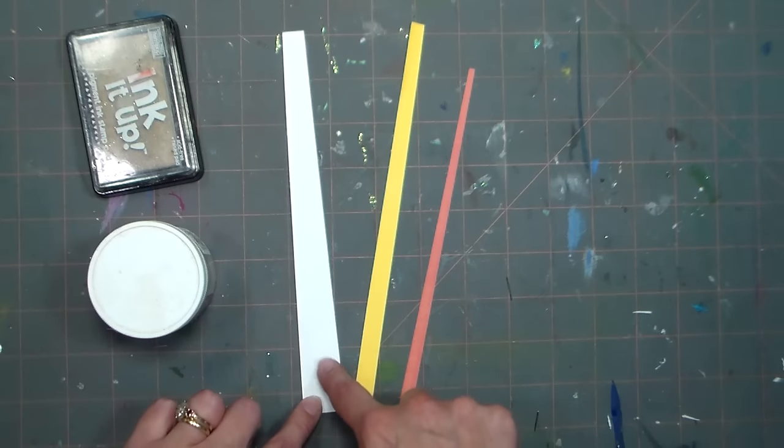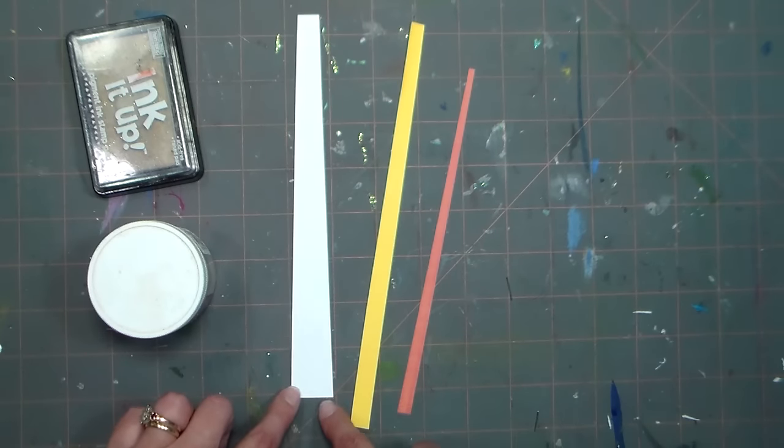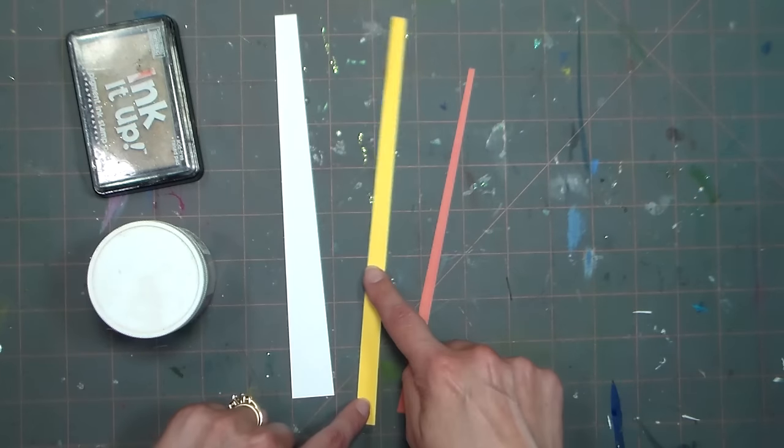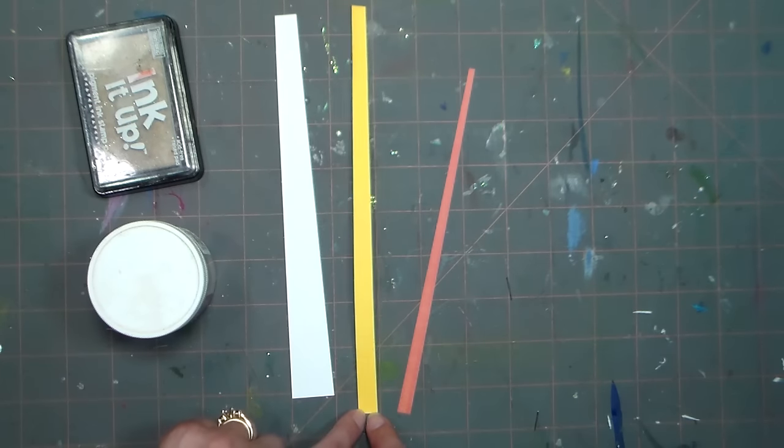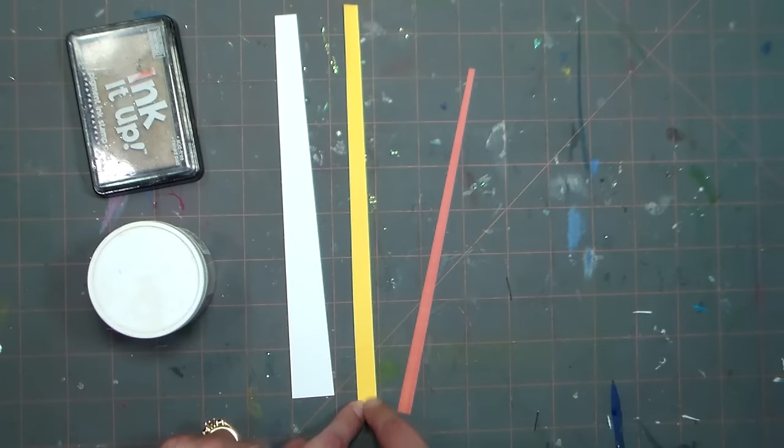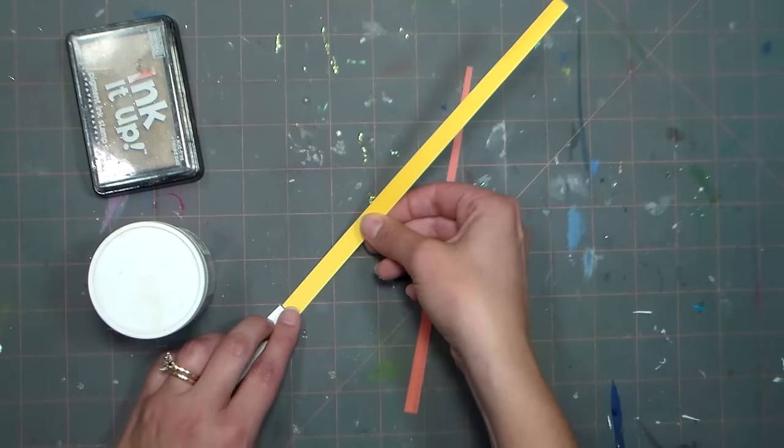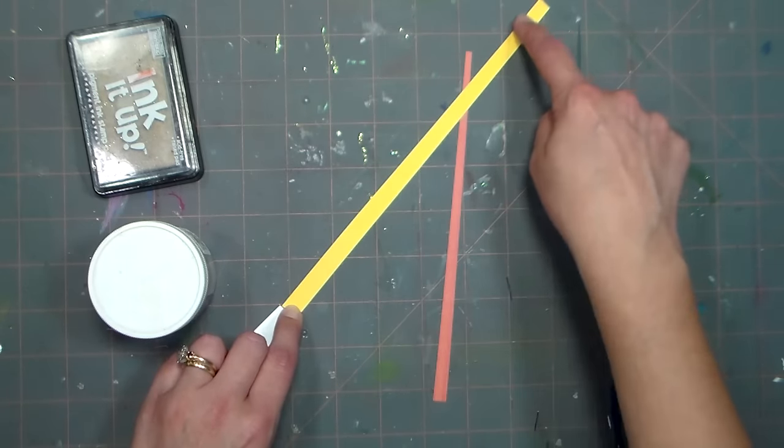I've got one piece of cardstock that's white and it measures about an inch on the wide end and it tapers down to a half an inch. Then I have a yellow paper, it starts at about a half an inch wide and it tapers down to about a quarter of an inch.